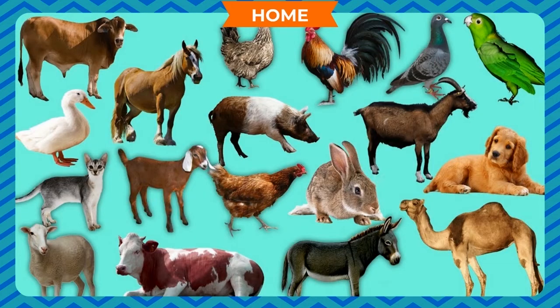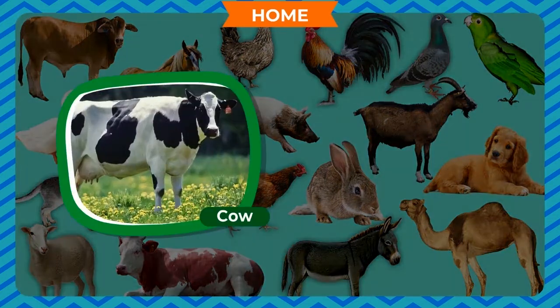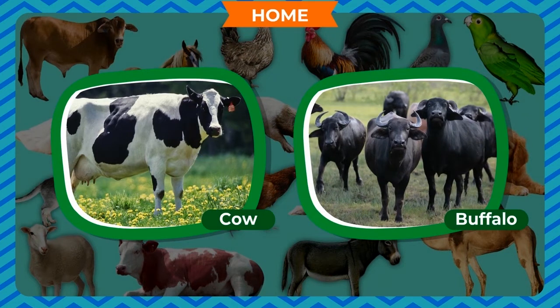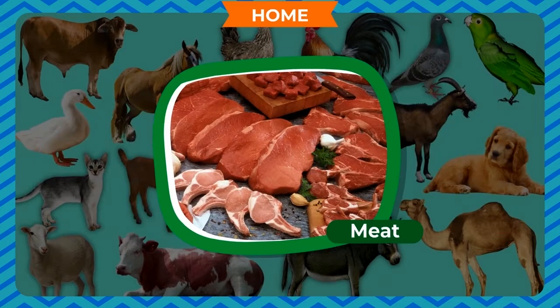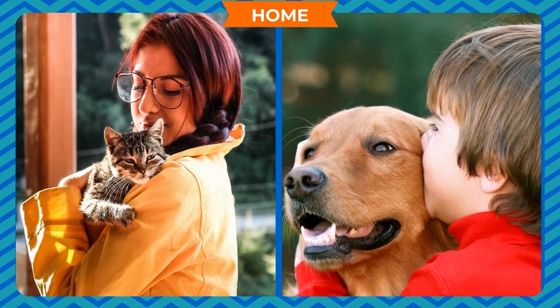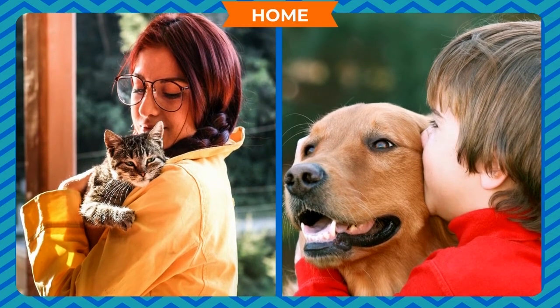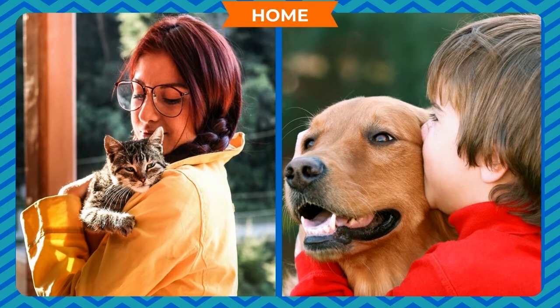Animals are also useful to us. Some domestic animals such as cows, buffaloes, etc. help humans in agriculture. Some also give us eggs, milk, meat, etc. Pet animals such as cats and dogs are our companions.